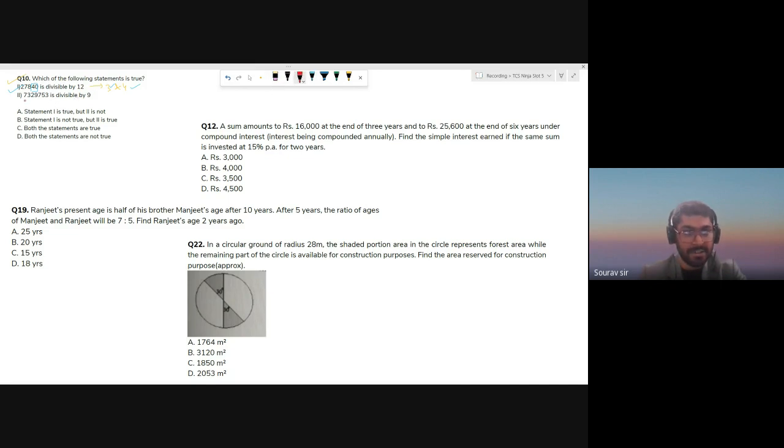Now we have to check if it is divisible by 9. Let's check the sum of digits: 7 plus 3 is 10, and 2 is 12, and 9 is 21, and 7 is 28, and 5 is 33, actually 36. Yes, this is by 9, so this statement is also true. Both of our statements are true, option C.